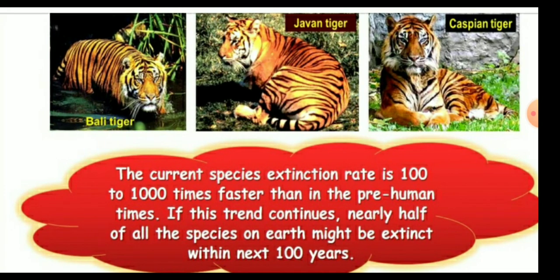From the study of the history of life on earth through the fossil record, we learn that large-scale losses of species like the one we are currently witnessing have also happened earlier, even before humans appeared on the scene. During the long period since the origin and diversification of life on earth, there were 5 episodes of mass extinction.